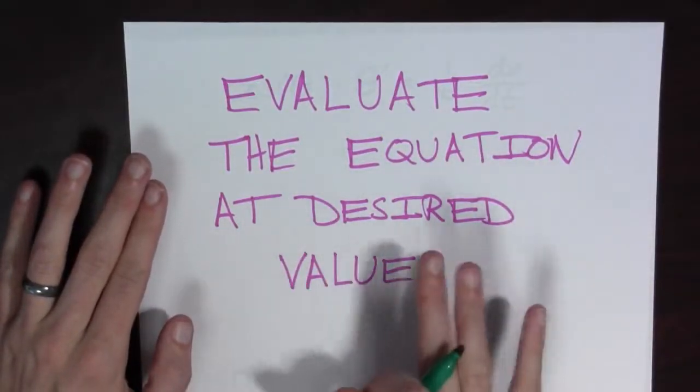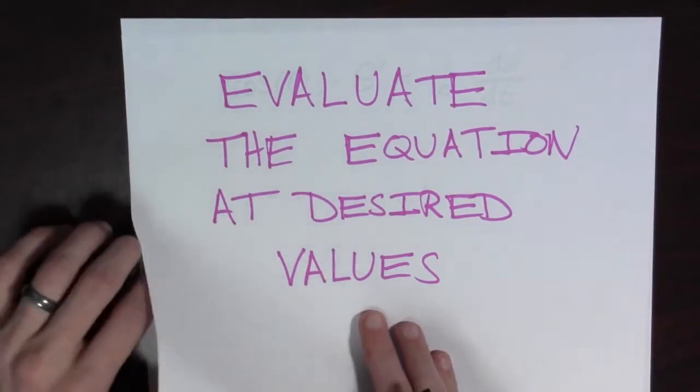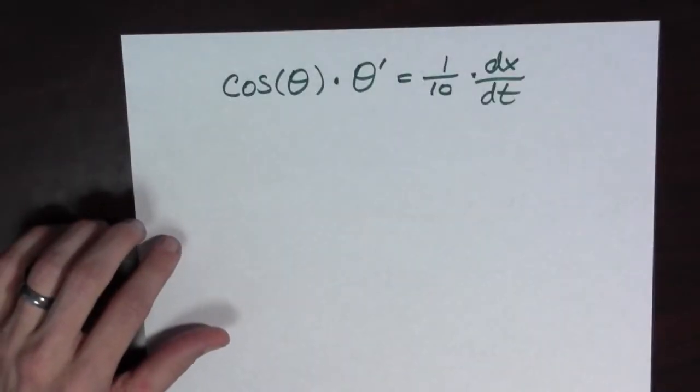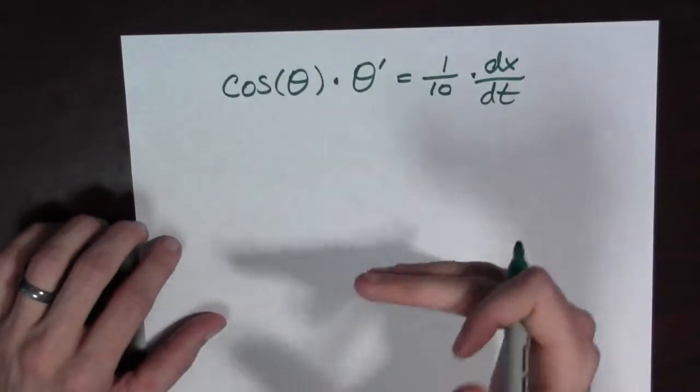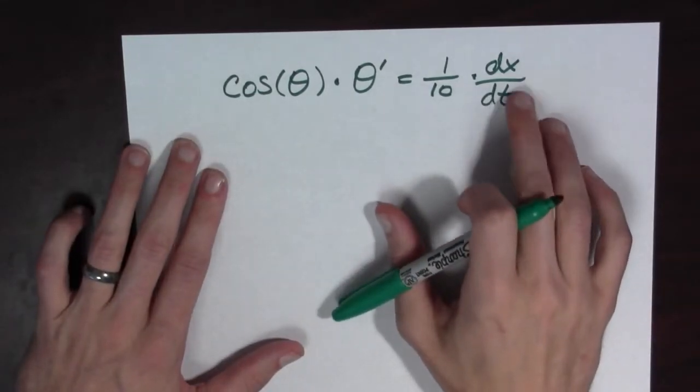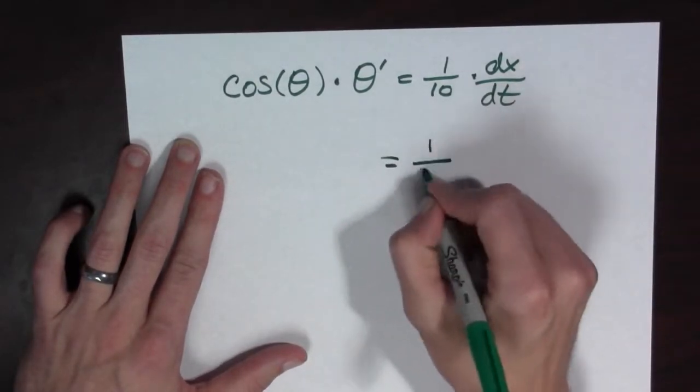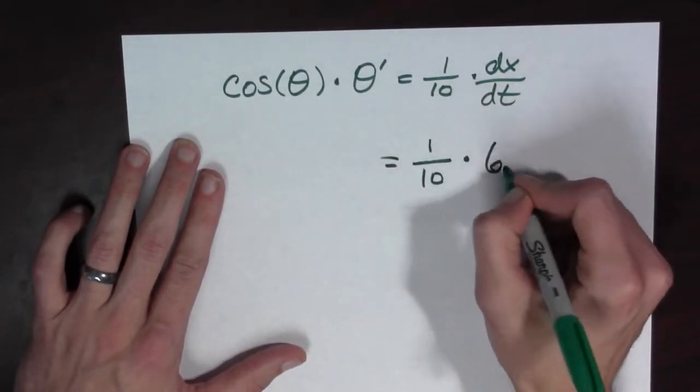Now that we've differentiated our equation, we're going to evaluate the equation at desired values. Alright, so we want to know what the angular speed of the rope is in degrees per second after one second. Well, we know that the person's being pushed at six feet per second. So this is going to be one over ten times six.